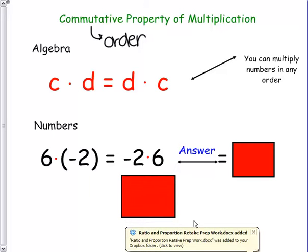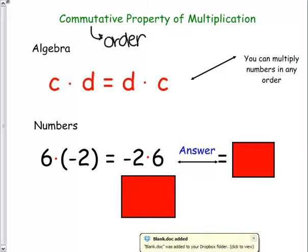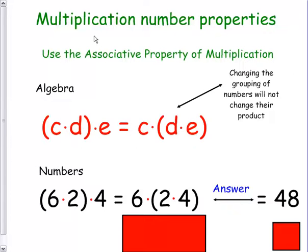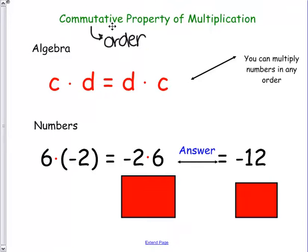The negative 2 would first be multiplied, and then times the 6. So our answer would still be negative 12. So let's recap. Associative is always the group who they associate with, and commutative is always the change in the order.